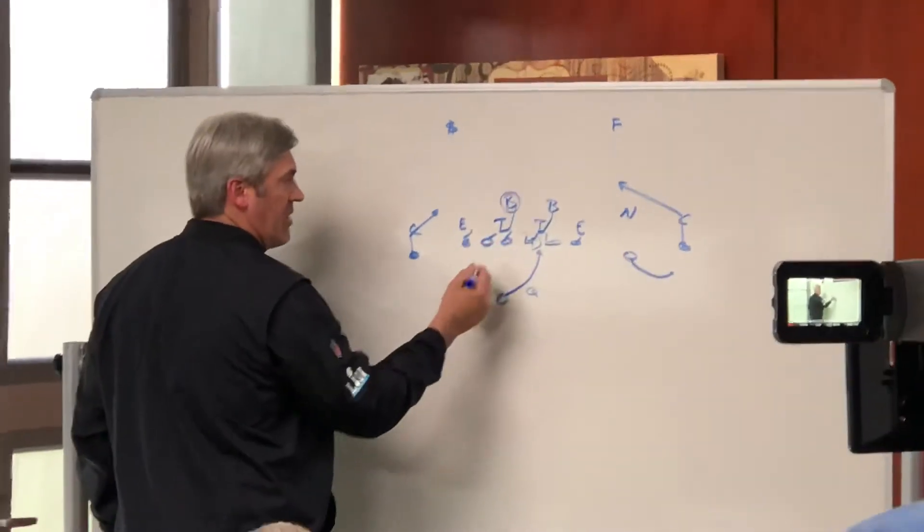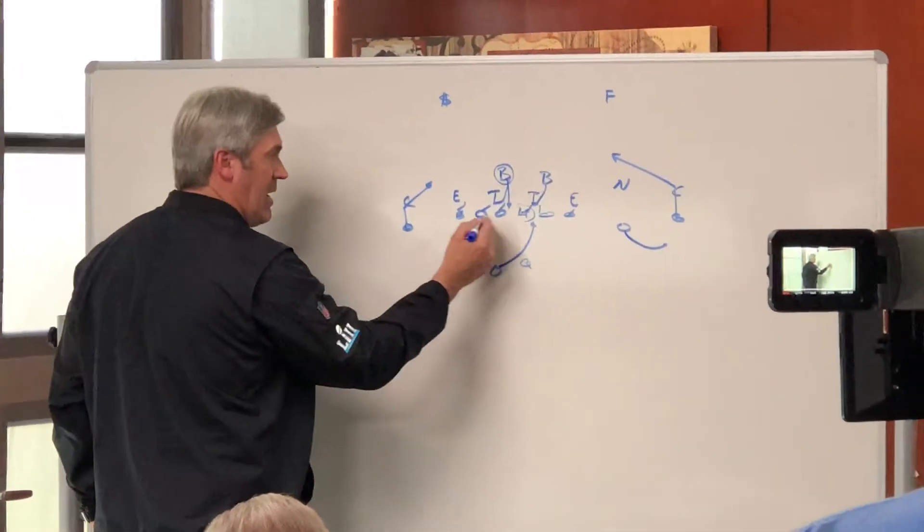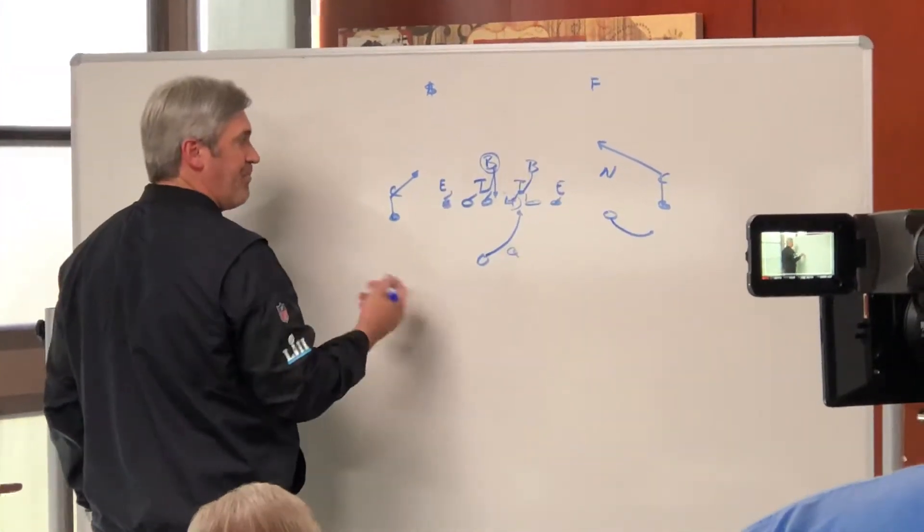That linebacker, he's going to see where he is. So in this particular configuration, he's kind of in this A-gap area, what we call the A-gap, A-B-C, D-outside.